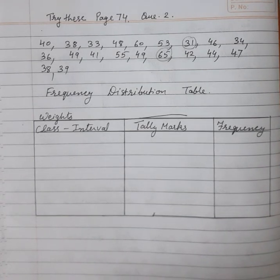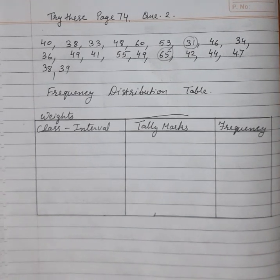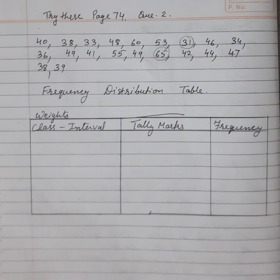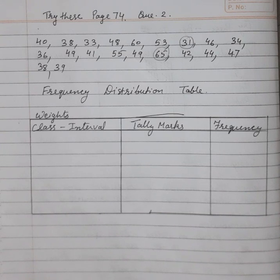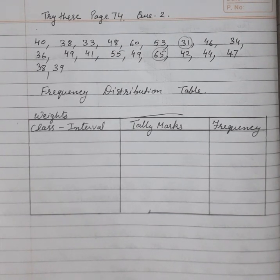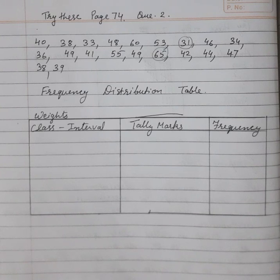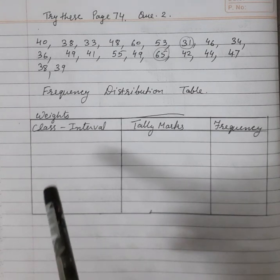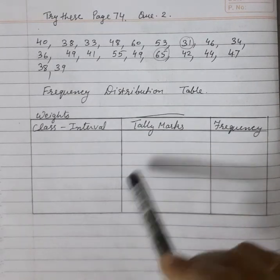Let's try question number 2 on page 74. In this question we have got data and we have to construct a frequency distribution table for the data on weights. This data is regarding the weights of 20 students of a class. You can see that there are 20 students' weights given, and hardly any weight is getting repeated, so we cannot write all the weights and then find the tally marks.